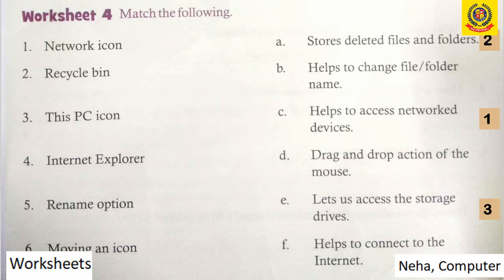Fourth, Internet Explorer. It is matched with F — helps to connect to the internet. Write 4 after the sentence. Fifth, rename option. It is matched with B — helps to change file or folder name. Write 5 after the sentence. Moving an icon — matched with D — drag and drop action of the mouse. Write 6 after the sentence. So in this way, match the following is done in worksheet 4.